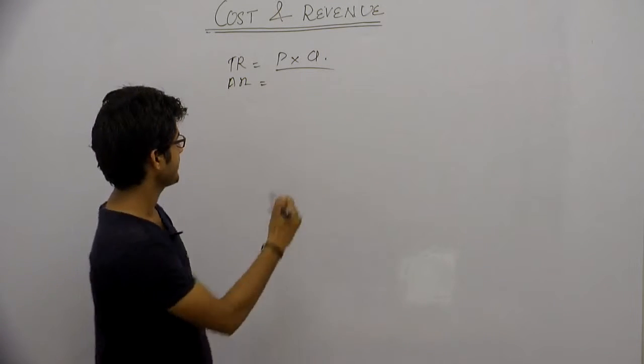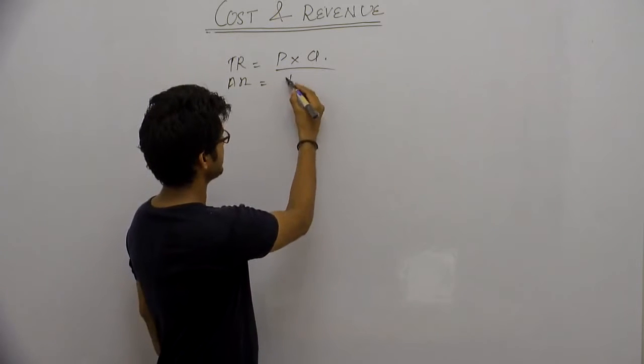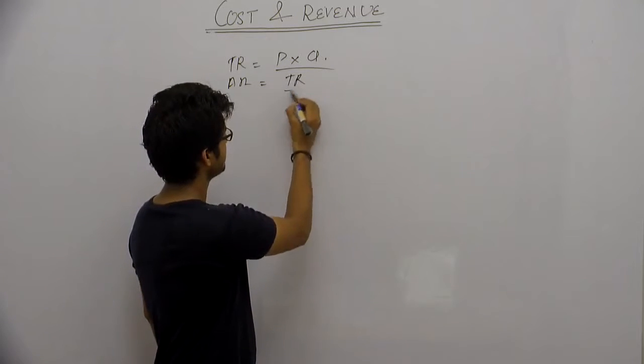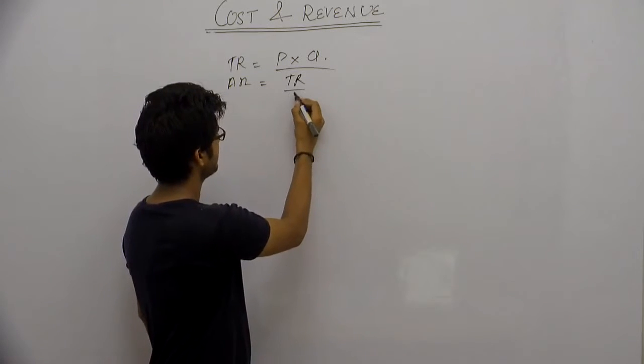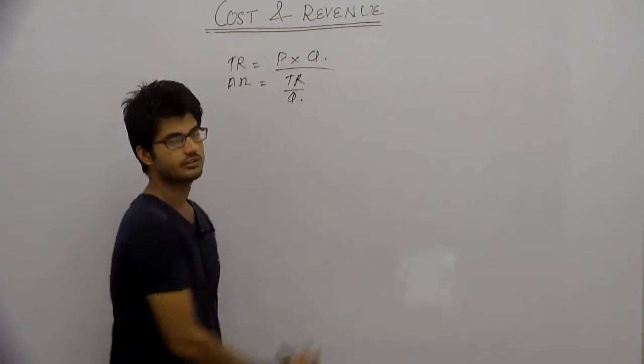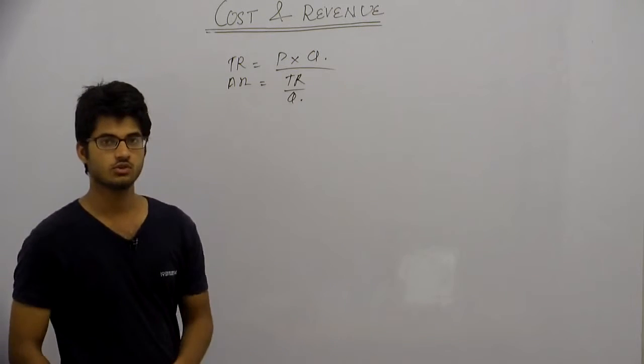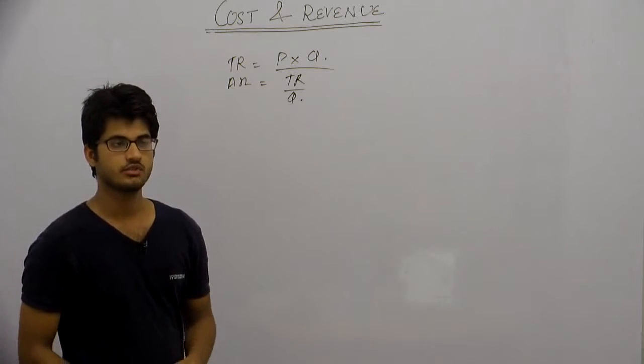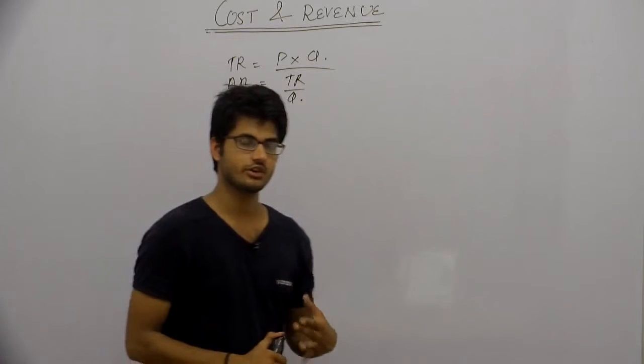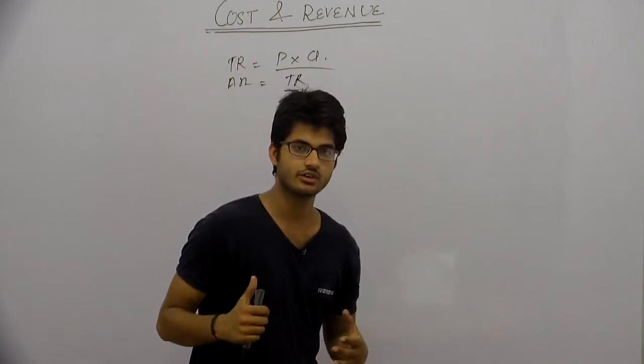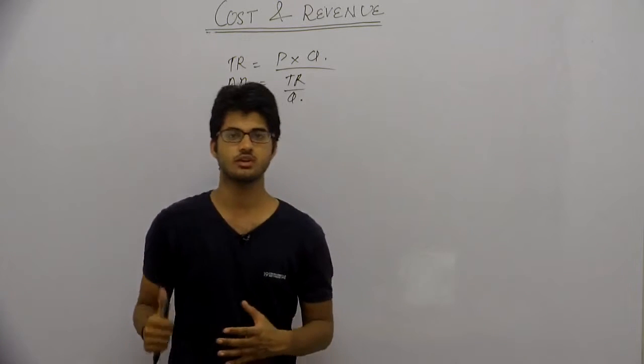Average revenue is the revenue that we get per unit of output. It is calculated as total revenue divided by the quantity that has been sold.